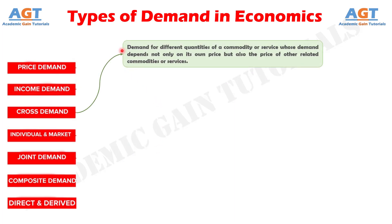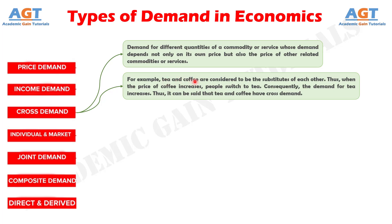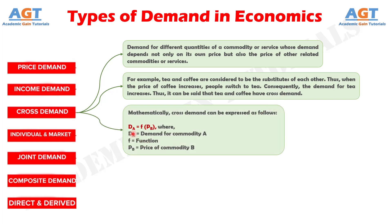Cross demand refers to the demand for different quantities of a commodity or service whose demand depends not only on its own price but also on the price of other related commodities or services. For example, tea and coffee are substitutes — when the price of coffee increases, people switch to tea, so the demand for tea increases. Mathematically, cross demand is expressed as: D(A) = f(P(B)), where D(A) represents demand for commodity A and P(B) represents the price of commodity B.